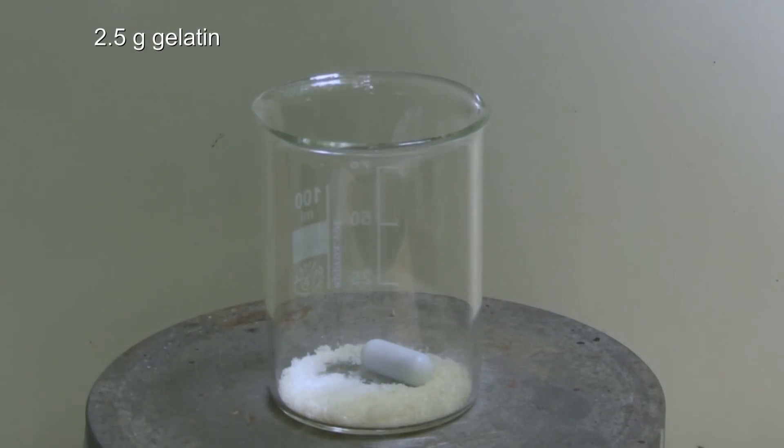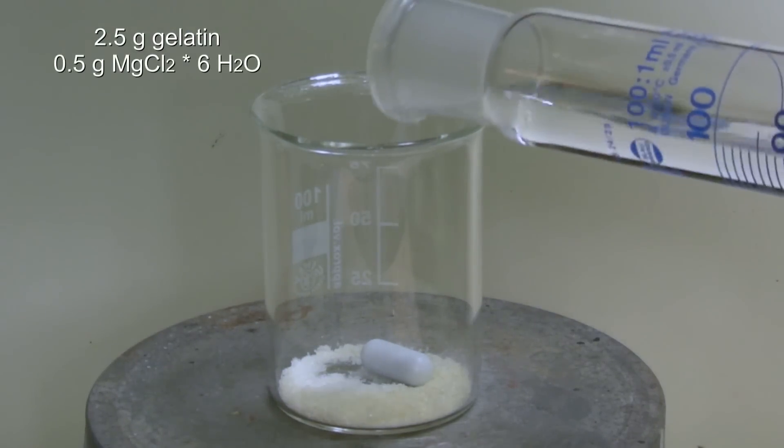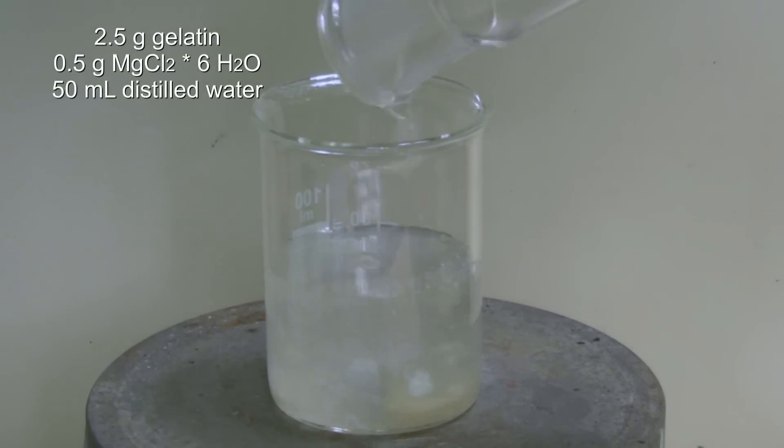First, 2.5 grams of gelatin and 0.5 grams of magnesium chloride are mixed with 50 milliliters of distilled water.